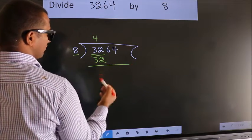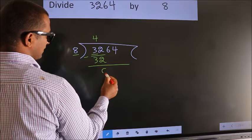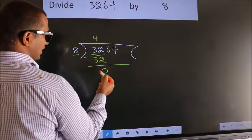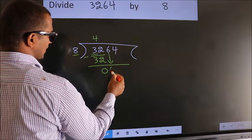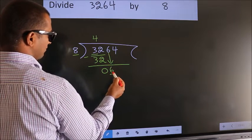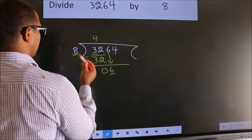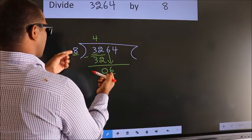Now, we should subtract. We get 0. After this, bring down the beside number. So, 6 down. Now, here we have 6. Here 8. 6 smaller than 8.